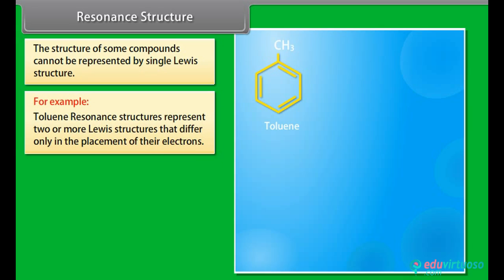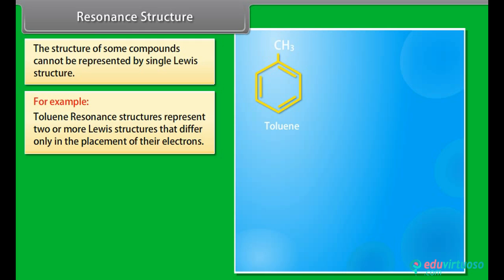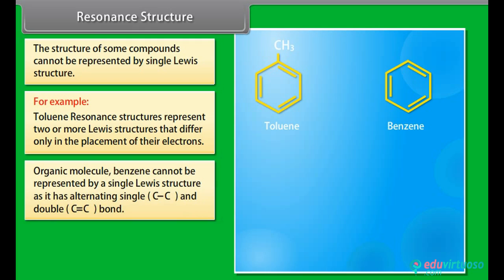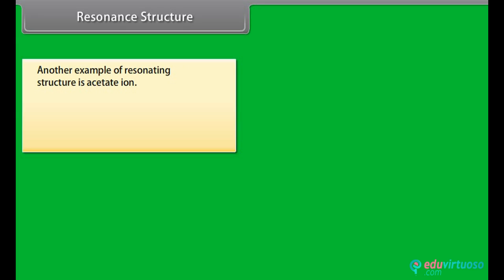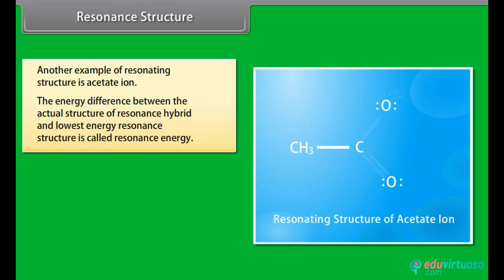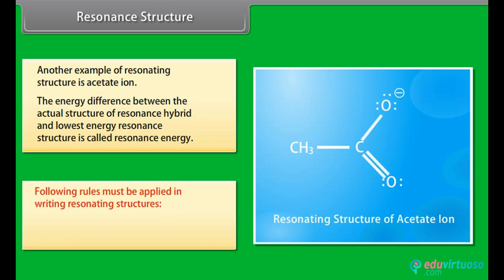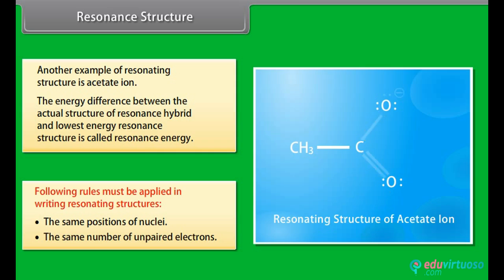The structure of some compounds cannot be represented by a single Lewis structure — for example, toluene. Resonance structures represent two or more Lewis structures that differ only in the placement of electrons. Benzene cannot be represented by a single Lewis structure as it has alternating single and double bonds; its structure is a resonance hybrid of two resonating structures. Another example is the acetate ion. The energy difference between the actual resonance hybrid and the lowest energy resonance structure is called resonance energy. Resonating structures must have the same positions of nuclei and the same number of unpaired electrons.